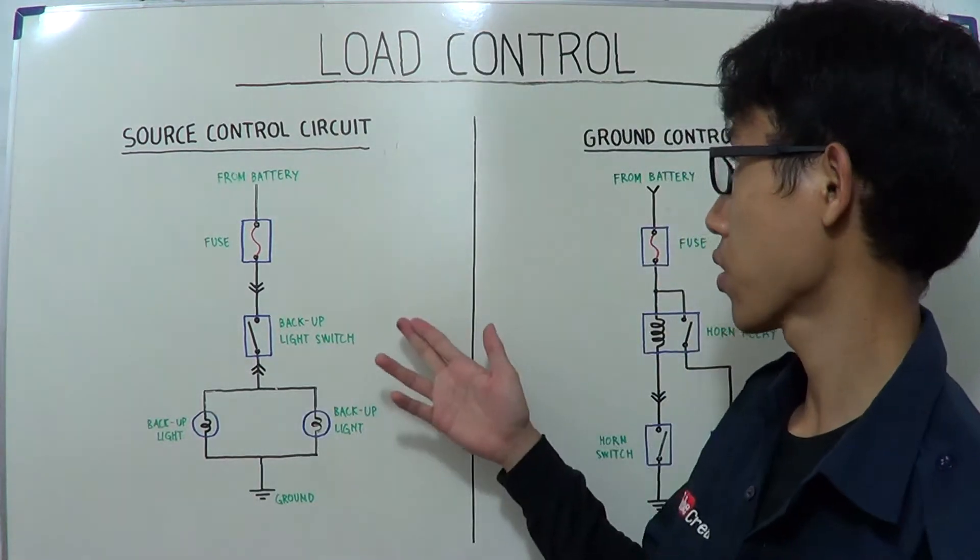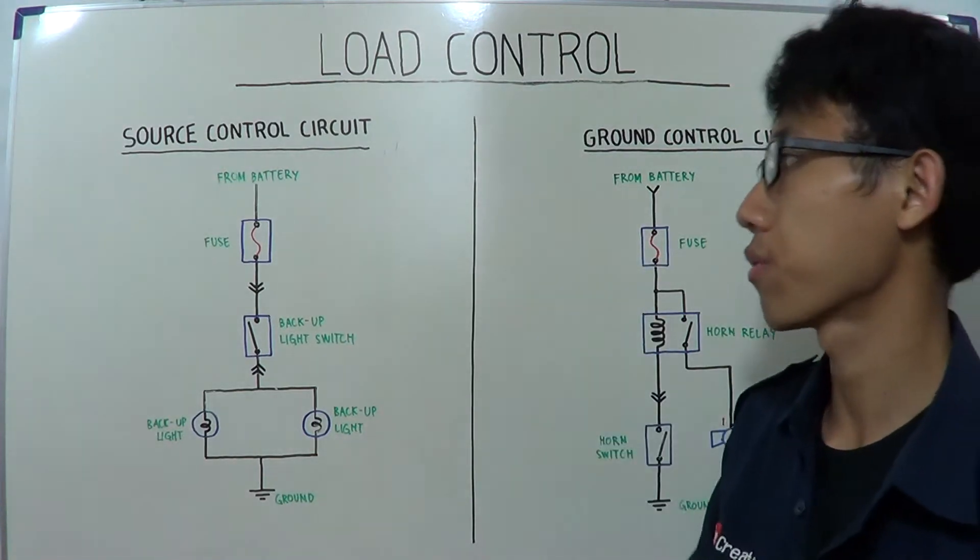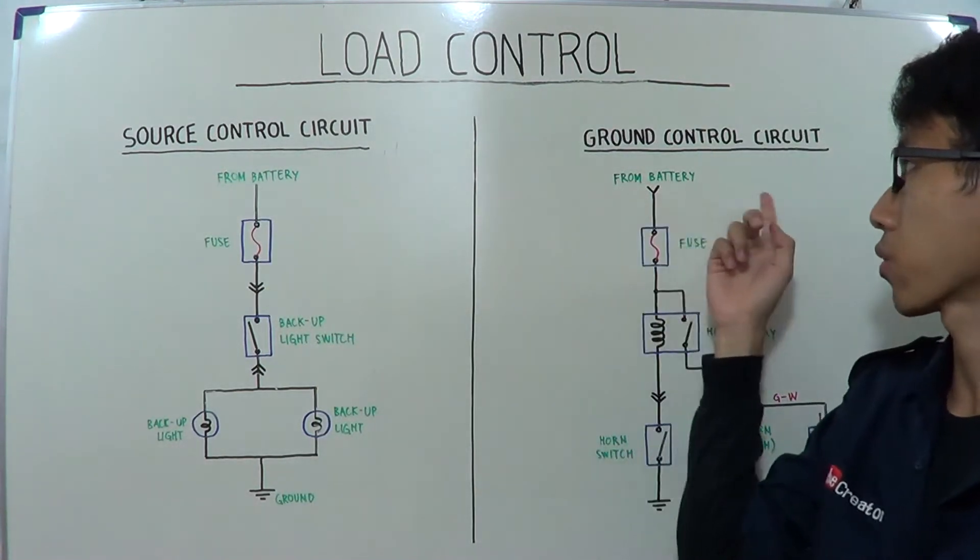There are two types of control circuit or load control. The first is source control circuit and the second is ground control circuit.